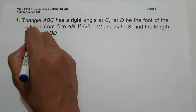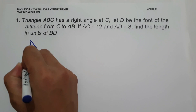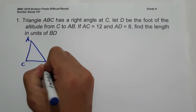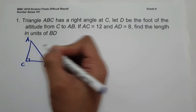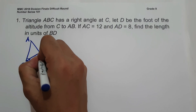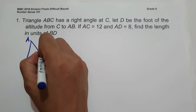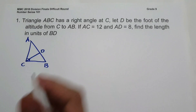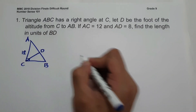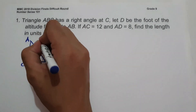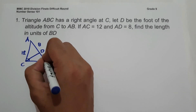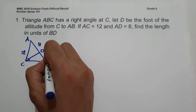If we are going to illustrate the given problem, let us have triangle A, C, and B — this will be a right angle. Let D be the foot of the altitude from C to AB, so this is D. AC equals 12, AD equals 8.